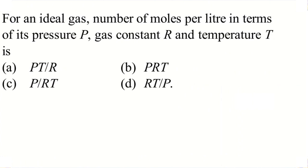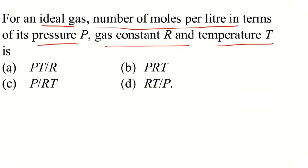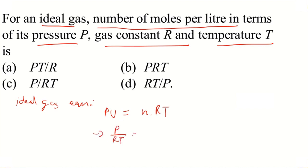Next question: for an ideal gas, the number of moles per liter in terms of pressure P, gas constant R, and temperature T is which of the following? Using the ideal gas equation PV = nRT, we rearrange to get n/V = P/RT. So the number of moles per liter is P/RT.